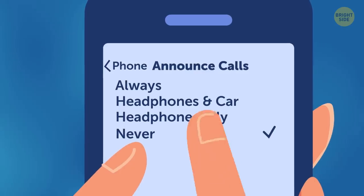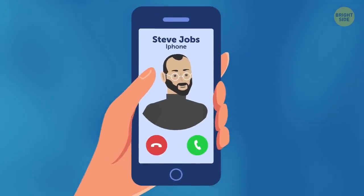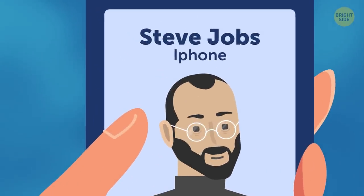For example, I opted for Headphones Only, but you might find it more convenient if your smartphone always informs you about the caller's identity.